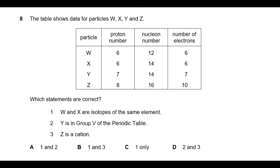Statement 3 says Z is a cation. A cation is an atom that has lost electrons, meaning protons are more than electrons. But in Z, the protons are less than the electrons — so Z is not a cation, it is an anion. Statements 1 and 2 are correct, making A the correct answer for this question.